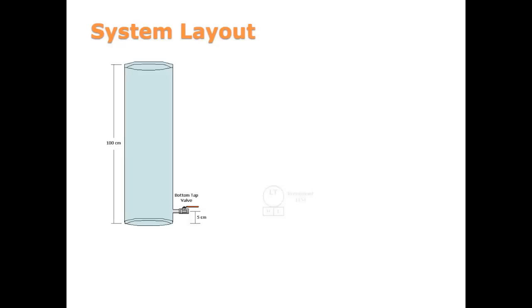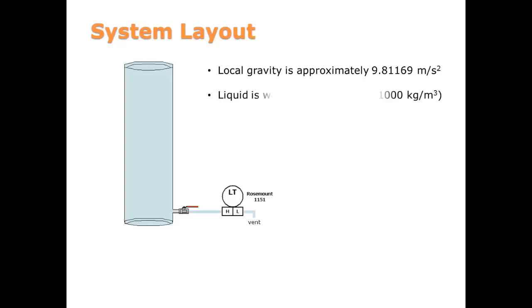The level transmitter is to be mounted at the same elevation as the bottom tap on the tank. The local gravity is approximately 9.81169 meters per second squared, and the liquid being measured is water at 4 degrees Celsius, which means the density is approximately 1,000 kilograms per cubic meter. You'll notice that the water used is probably not this cold, but to simplify the range calculation, this density will be used. There will be a small error in the level reading due to this assumption, but it should be negligible.